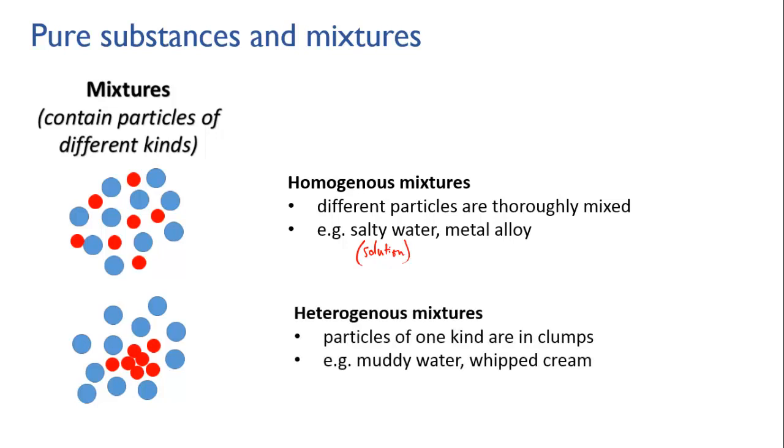In heterogeneous mixtures, on the other hand, the particles are not evenly distributed. Particles of one kind can be clumped or organised. Muddy water is an example of this. The clumps of dirt in muddy water are large clusters of particles. And in whipped cream, each bubble in the cream is a clump of air. If the clumps are small enough, mixtures of this kind are called colloids. A well-mixed salad dressing, smoke, and some gels are examples of colloids.